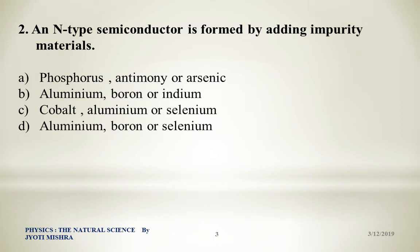Next question: An N-type semiconductor is formed by adding which impurity materials? Option A: phosphorous, antimony, and arsenic. Option B: aluminum, boron, or indium. Option C: cobalt, aluminum, or selenium. Option D: aluminum, boron, or selenium. When we add a pentavalent impurity to a pure semiconductor material, an N-type semiconductor is formed. So the correct answer is Option A: phosphorous, antimony, and arsenic.